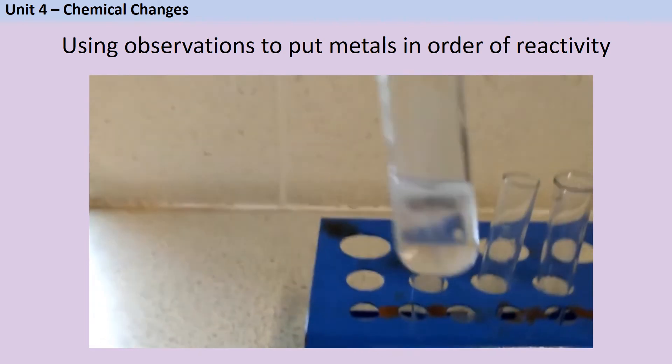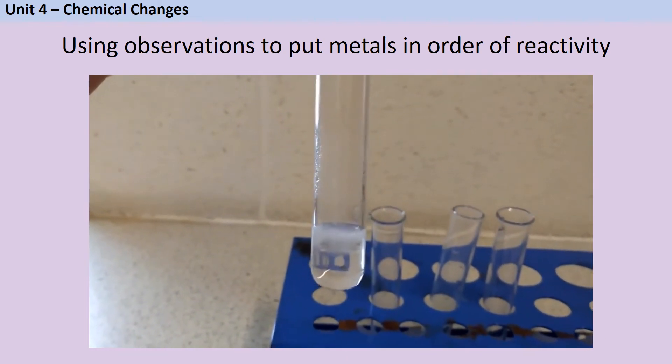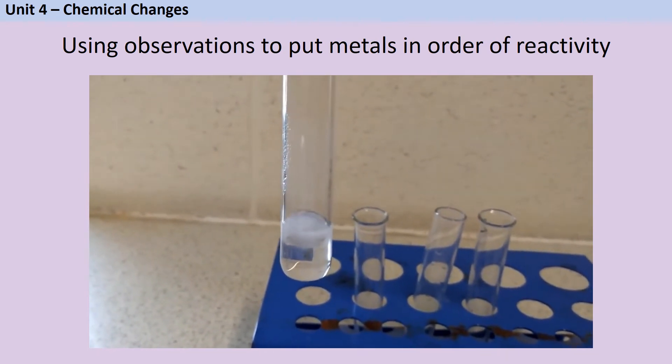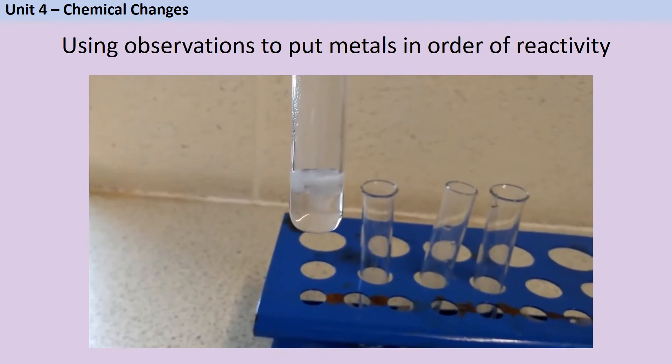When metals react with an acid, they release hydrogen gas and they also make a salt. Because we're using hydrochloric acid, these are all going to make chloride salts. The magnesium is bubbling a lot.